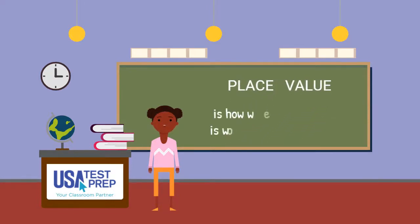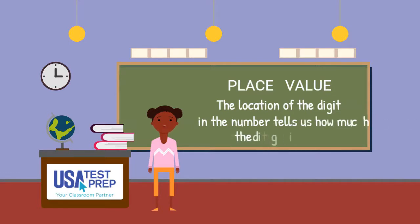Today we are going to learn about place value. Place value is how we know what a digit is worth in a larger number. The location of the digit in the number tells us how much the digit is worth.